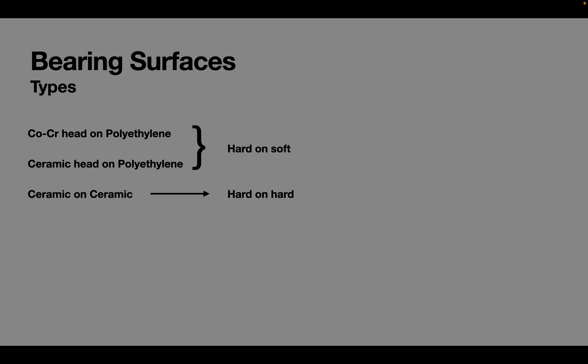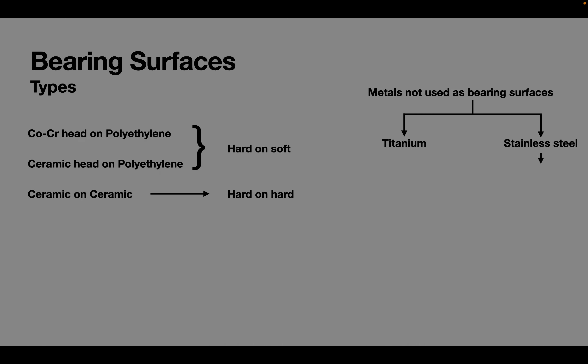Metal on ceramic has poor wear properties and is also not routinely used. Metal used for hip articulation in metal on polyethylene is cobalt, chromium, and molybdenum alloy. Metals not commonly used are titanium and stainless steel because both have a high surface roughness. In addition, titanium has poor scratch resistance which predisposes it to further surface roughness.